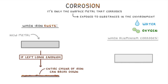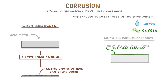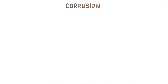In contrast, when metals like aluminium corrode, it's only the surface atoms that are affected. This is because when the top layer of aluminium atoms is oxidized to form aluminium oxide, they effectively form a protective layer around the piece of aluminium, which protects the rest of the metal from the environment.